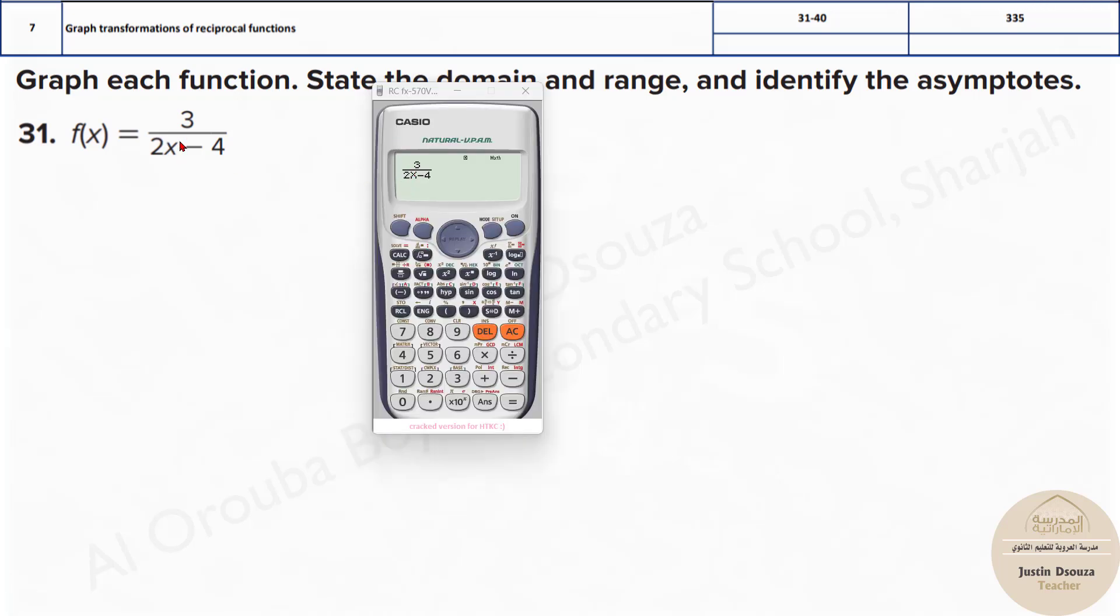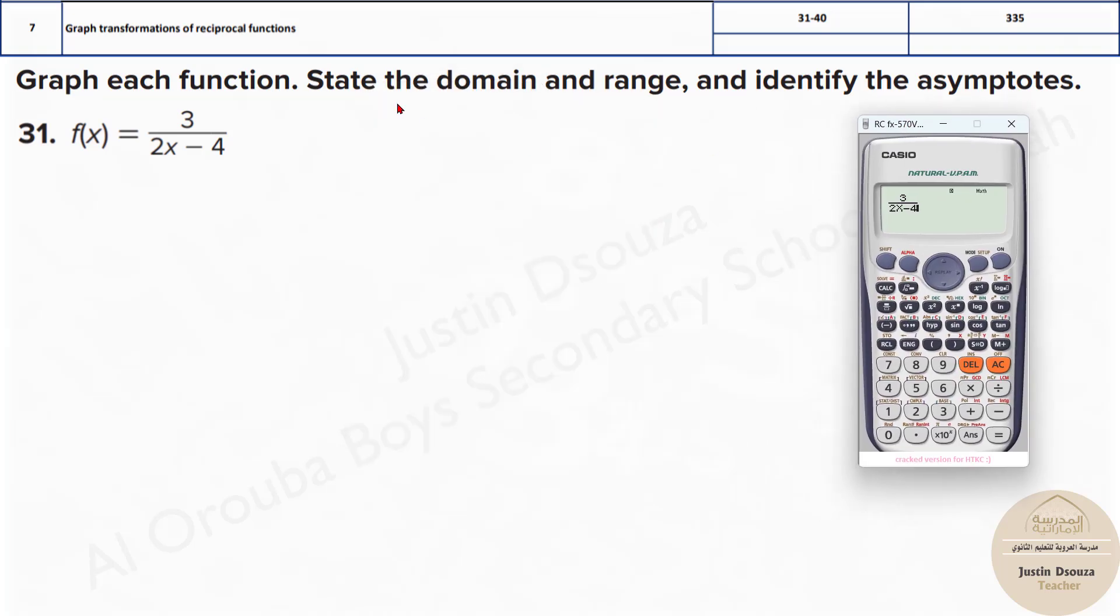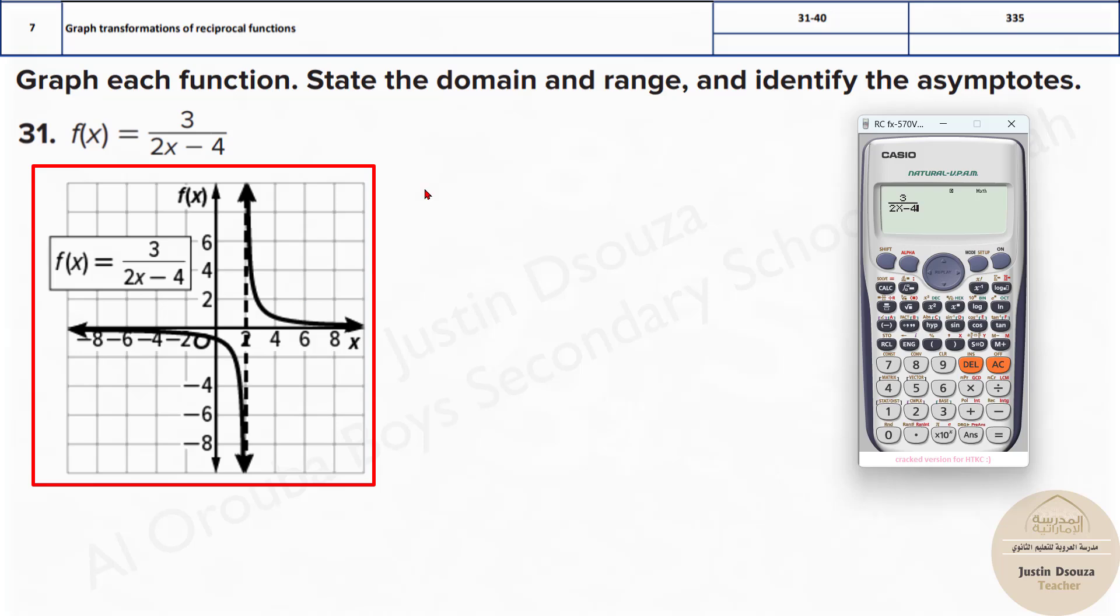Please write out the given function in the calculator with the variable x as it is. And then what you need to do is look into the four options because you will have graphs as four options.